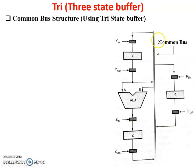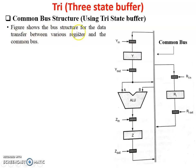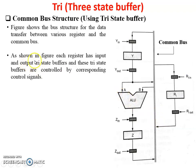Now this is the common bus structure using tri-state buffers. This is the common bus. You can see here: this is the ALU and these are different registers connected with tri-state buffers. The figure shows the bus structure for data transfer between various registers and the common bus. Y, Z, and R are different registers, and the two parallel lines represent the common bus. As shown in the figure, each register has input and output tri-state buffers. This is the RI register — RIIN is the control line for the input tri-state buffer and RIOUT is the control line for the output tri-state buffer.